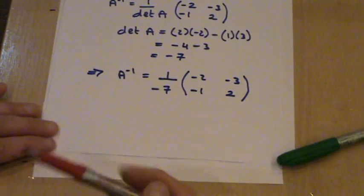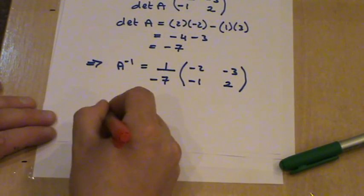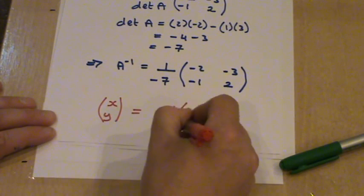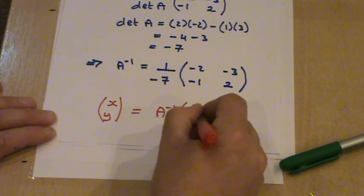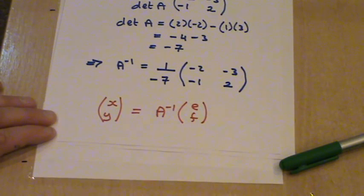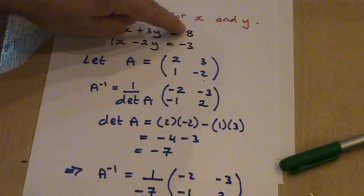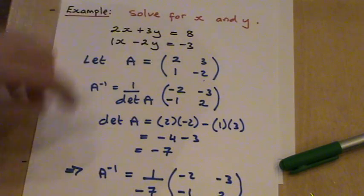And we're then going to use this form here, that xy equals A inverse times ef. Now, ef is the two entries we had on the right-hand side of the initial two equations. So here we've got an 8 and a minus 3.